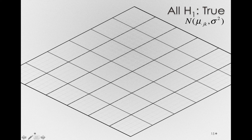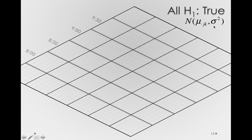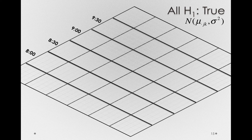Notice the notation here. We're going to be representing normal distributions with their own means — mu.jk's — and equal variance, so just one sigma squared. What I'm going to do is represent the different times across this axis: 8, 8:30, 9, and 9:30.